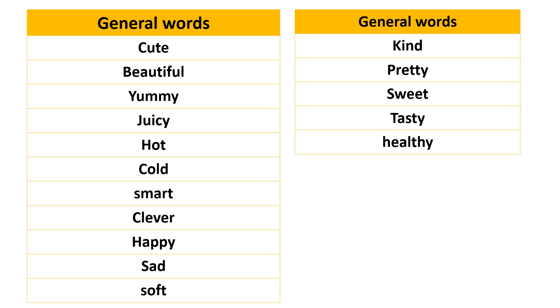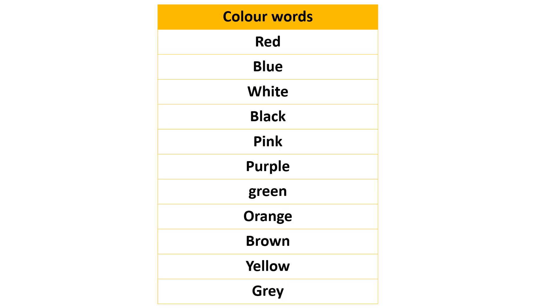Now we are going to see color words. Color words are basically all colors: red, blue, white, black, pink, purple, green, orange, brown, yellow, and gray.